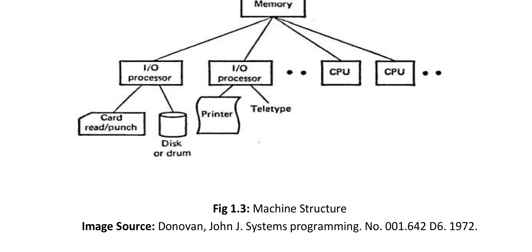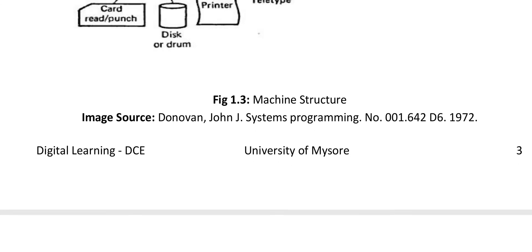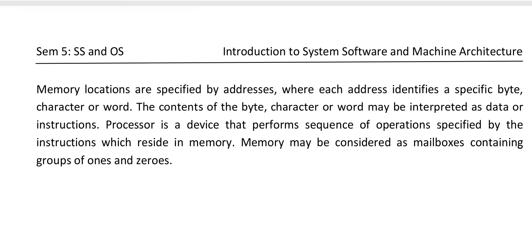This machine structure is shown in figure 1.3, where memory is the crucial part accessed by various input-output processors and CPUs. These input-output processors also make use of devices like the card reader, disk or drum, printers, and teletypes. These memory locations are specified by addresses, where each address identifies a specific byte, character, or word. The contents may be interpreted as data or instructions, and the processor performs sequences of operations specified by instructions residing in memory.